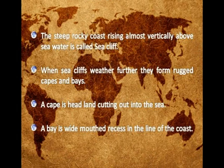The steep rocky coast rising almost vertically above sea water is called a sea cliff. When sea cliffs weather further, they form rugged caves and bays. A cape is a headland cutting out into the sea. A bay is a wide-mouthed indentation in the line of the coast.